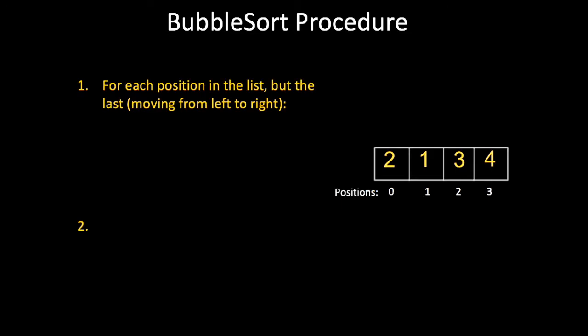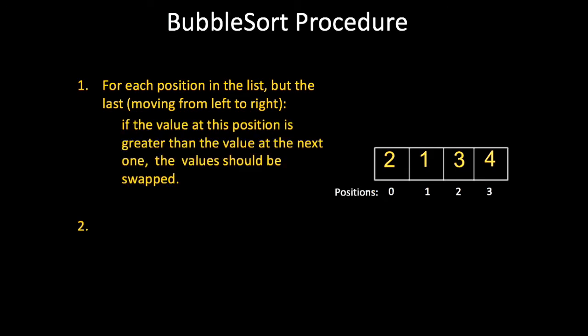Here is the Bubble Sort procedure. For each position moving left to right, but the very last position, if the value at the current position is greater than the one at the next, you swap; otherwise, you do not. Let's perform step one on the following list. First, we are at position zero, and we compare the values at that position and position one. We see two is greater than one, so we swap them. Now we are at position one, and since the value there, two, is less than the value at position two, three, we don't swap them. Next, we move to position two. We see that the value there, three, is less than the value at position three, four, so we don't swap them. And that concludes step one of Bubble Sort.